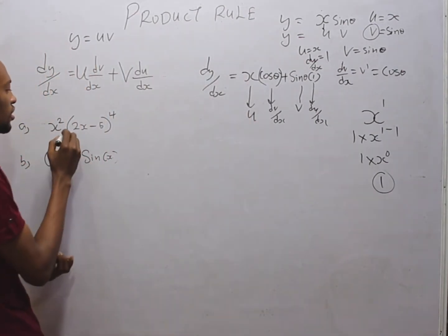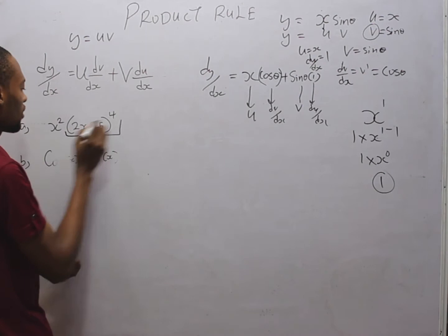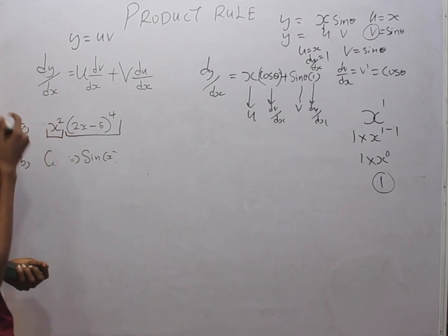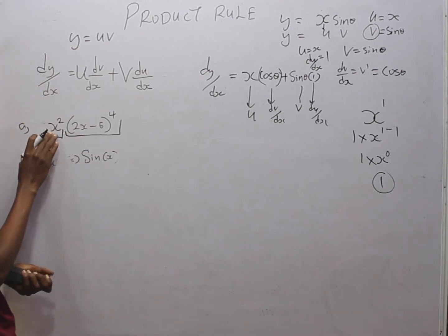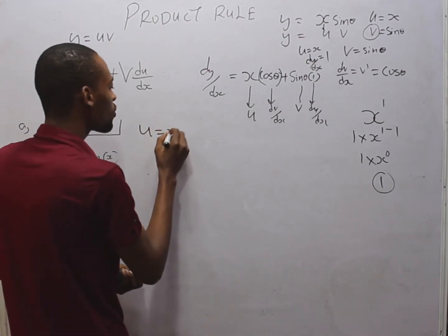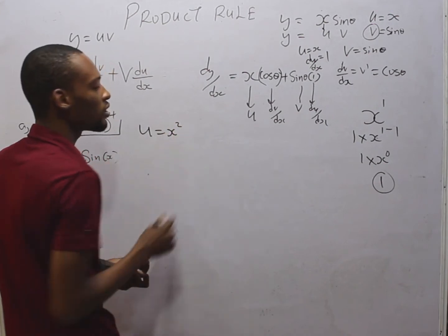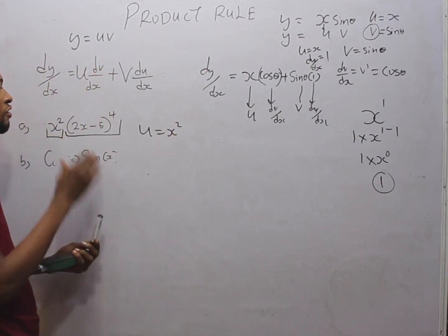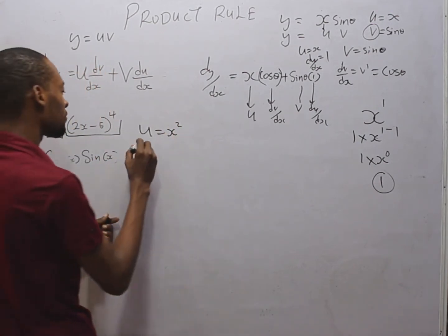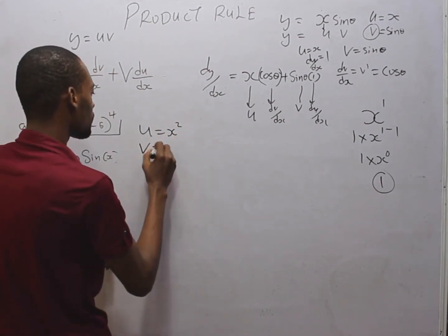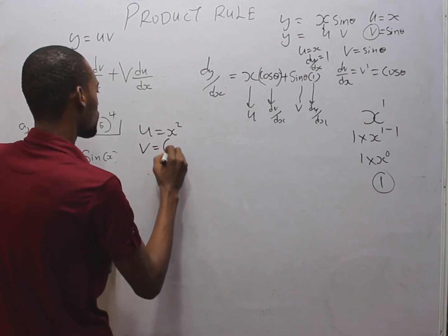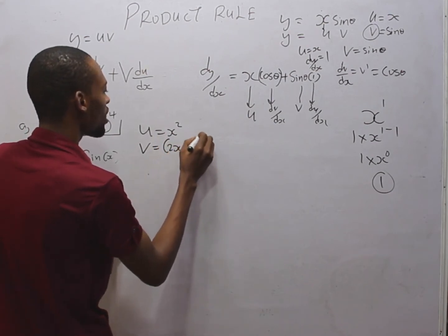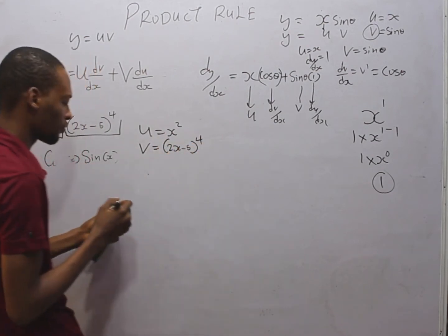Let's look at another example. We have two functions. Let u equal x squared, and v equal (2x minus 5) raised to the power of 4.